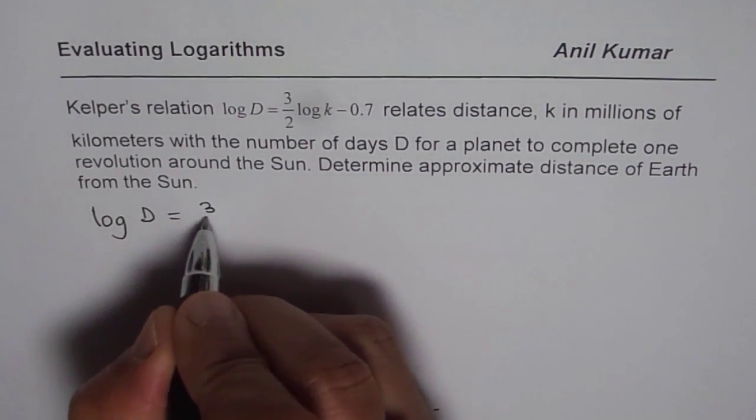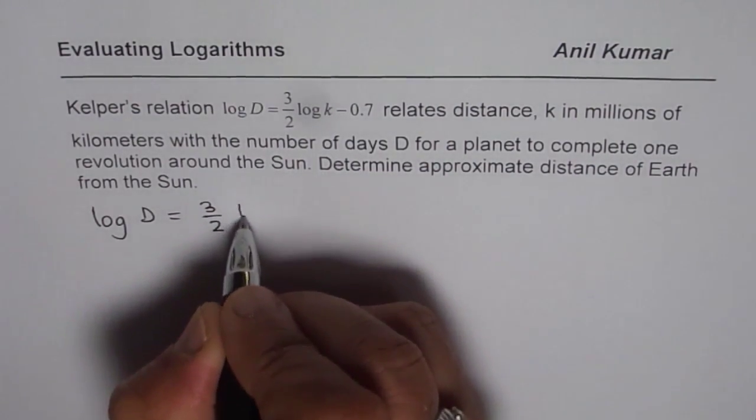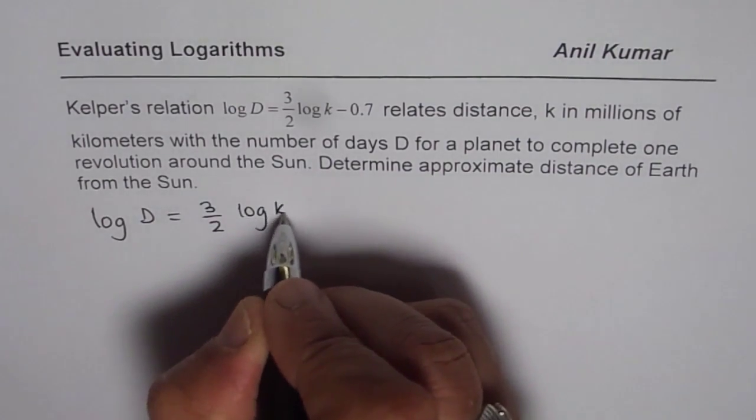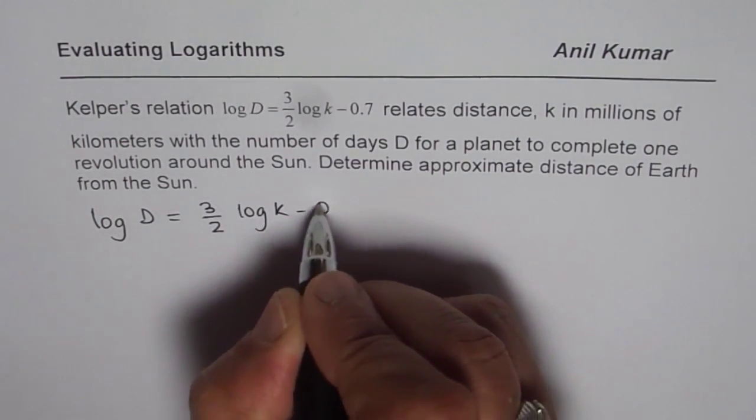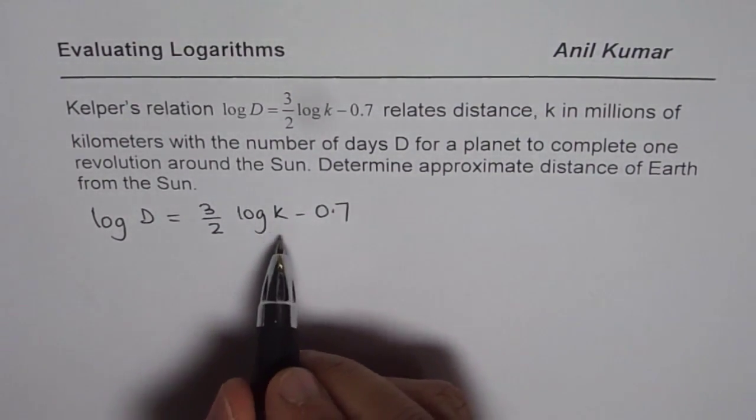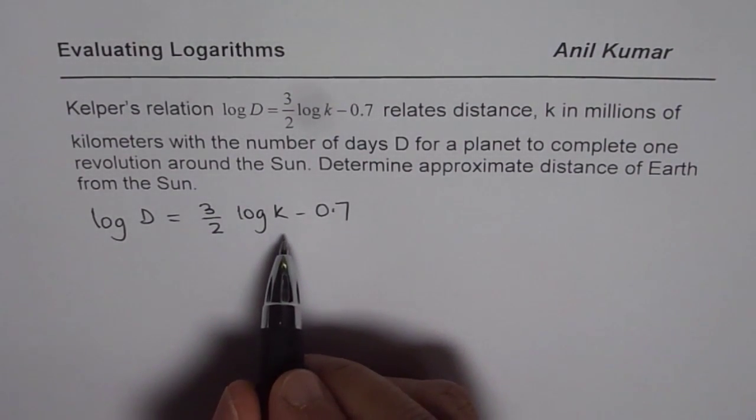For Earth, how many days does it take? We all know it is 365. Knowing these number of days, we can actually calculate the distance of Earth from sun. So that is the beauty of this equation.